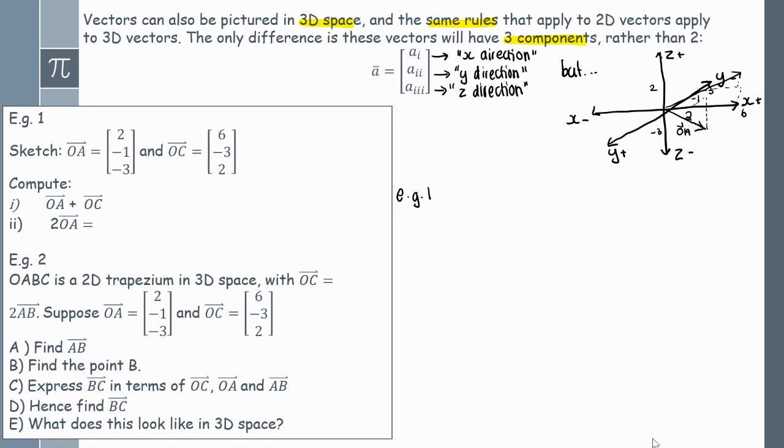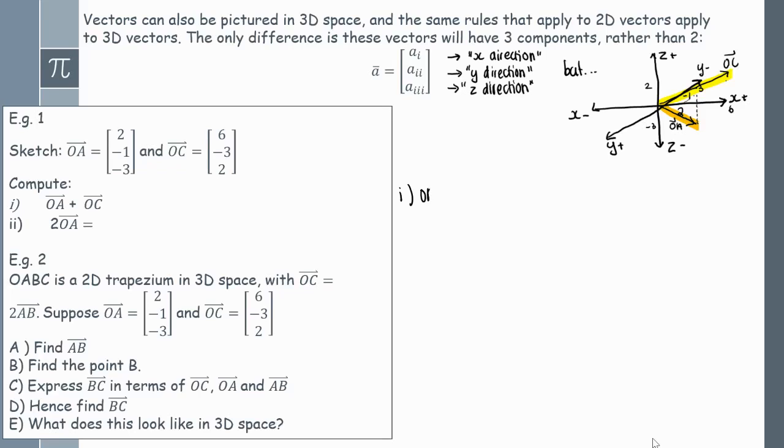The other vector is OC, so we start at O and we go to the point C. We move 6 units across in the x direction, negative 3 units back in the y direction, and then 2 units up in the z direction. My vector looks pretty terrible, but we can see a little bit that it's going upwards and diagonally. How do I compute OA plus OC if these vectors are in three dimensions? The answer is simple—we do exactly the same as what we would have done in 2D. You add each component component-wise. So 2 plus 6 gives you 8, minus 1 minus 3 gives you minus 4, and minus 3 plus 2 gives you minus 1.